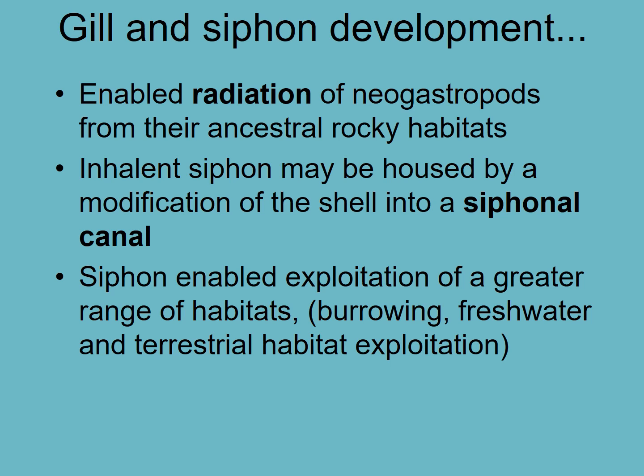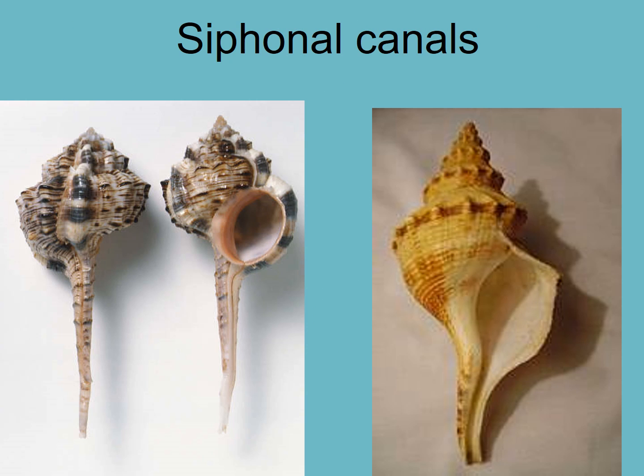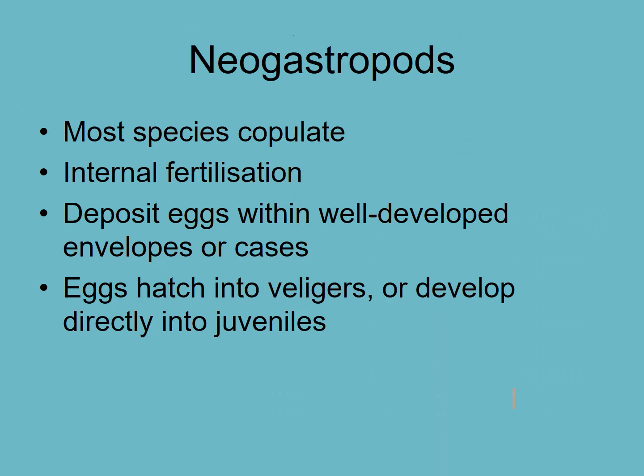So we've talked about the monopectinate gill, which enabled them to radiate out into soft sediments from rocky habitats. This opened up massive amounts of territory for exploration and habitation, and they diversified largely. Siphonal canals, as we've talked about, can be very big. This is one of our pinyon whelks from locally, and this is a murex. The difference between the archaeogastropods and the neogastropods is most of these copulate with internal fertilization, and then they lay eggs — you'll often find whelk eggs deposited in little envelopes, little cases.